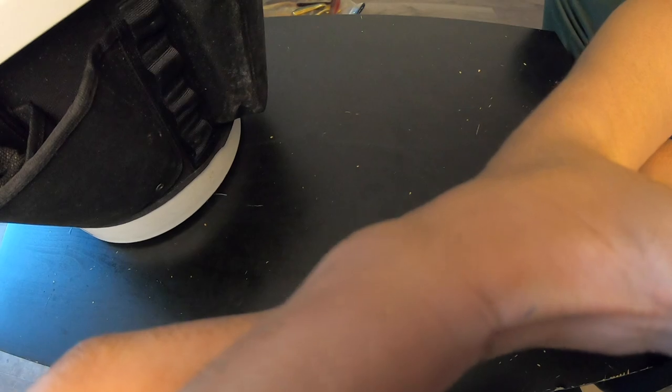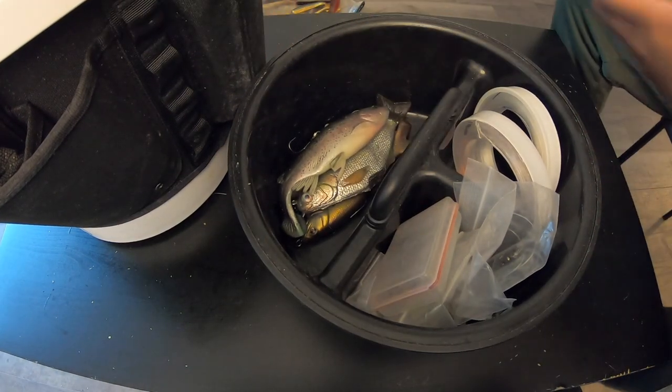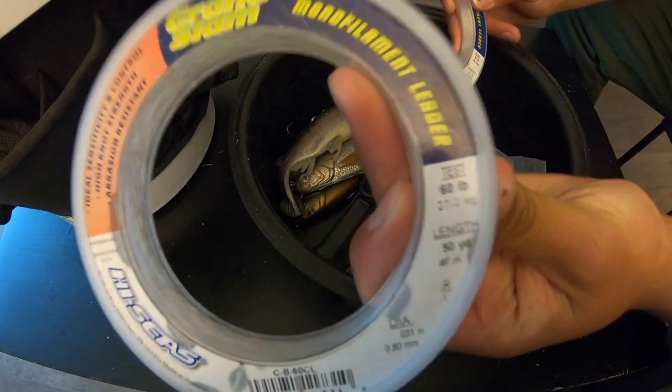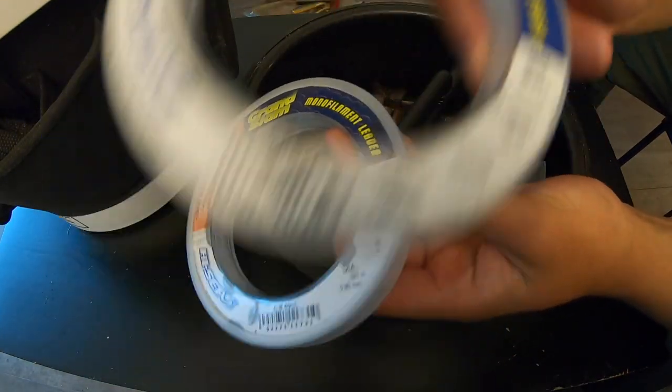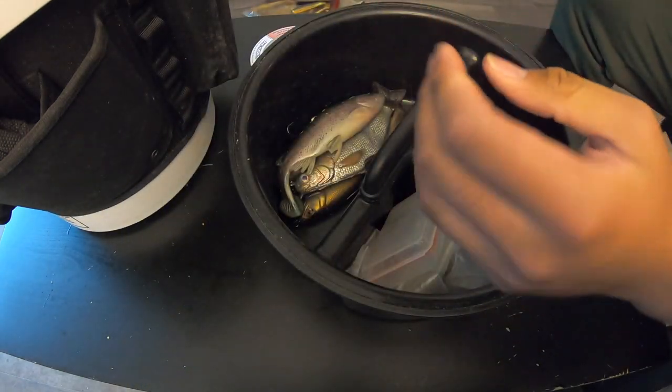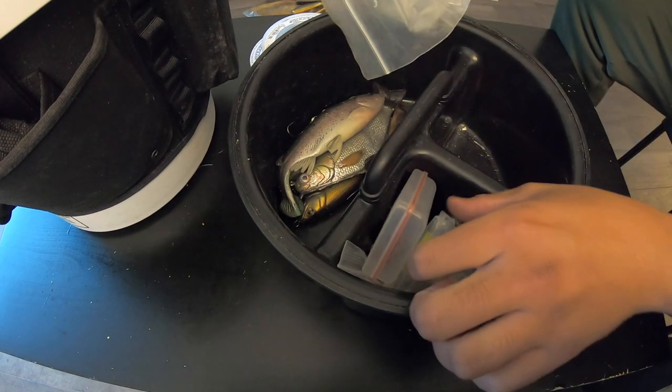The first section here at the top is primarily terminal tackle. I bring 60 pound mono and 80 pound mono. The 60 is for swimbaits and the 80 is for trap rigs and three-way rigs. You got to bring some three-way rigs and trap rigs because sometimes the conditions just aren't good for swimbait fishing.